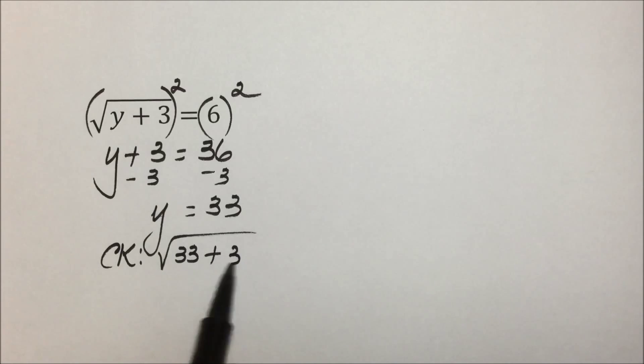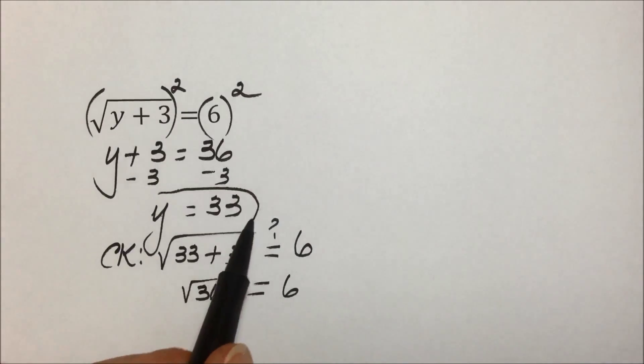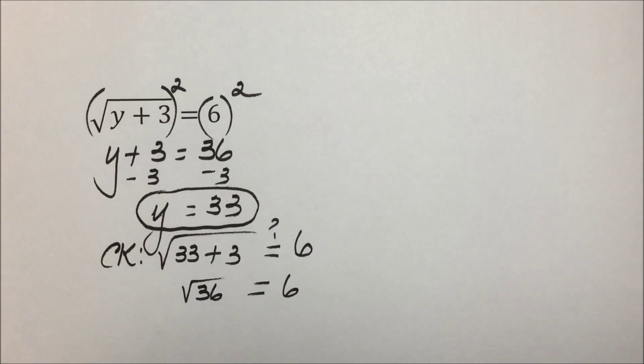Before we are done with the problem though, we want to make sure that that does work because of the possibility that the principle of powers is not always true, and sometimes it generates what we call an extraneous root, a solution that doesn't work. But let's see if it works here. Replacing y with 33 plus 3 into the original equation, we'll see if it does in fact give us a result of 6. Well 33 plus 3 is 36, and the square root of 36 is 6. So we can accept our solution for that particular problem.